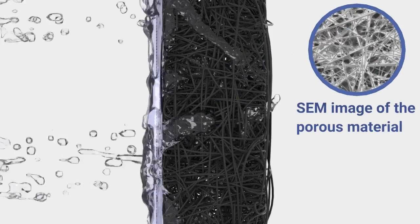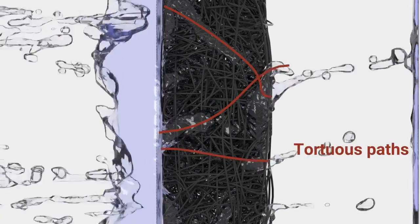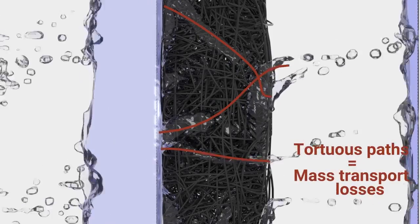Removing the water from the cell is challenging. In porous diffusion layers, the paths for air and water are tortuous, which leads to mass transport losses.